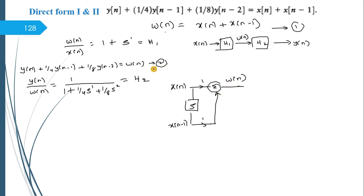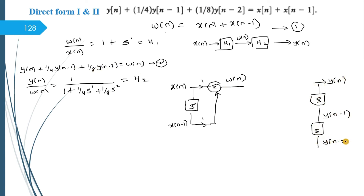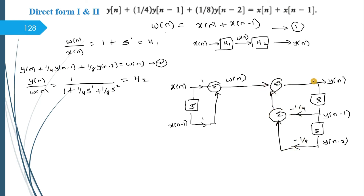For the y(n) part of Direct Form 1: y(n) = w(n) - (1/4)·y(n-1) - (1/8)·y(n-2). Shift y(n) once to get y(n-1), constant -1/4; shift again to get y(n-2), constant -1/8. Sum these with w(n) to produce y(n). This completes Direct Form 1 for this example.